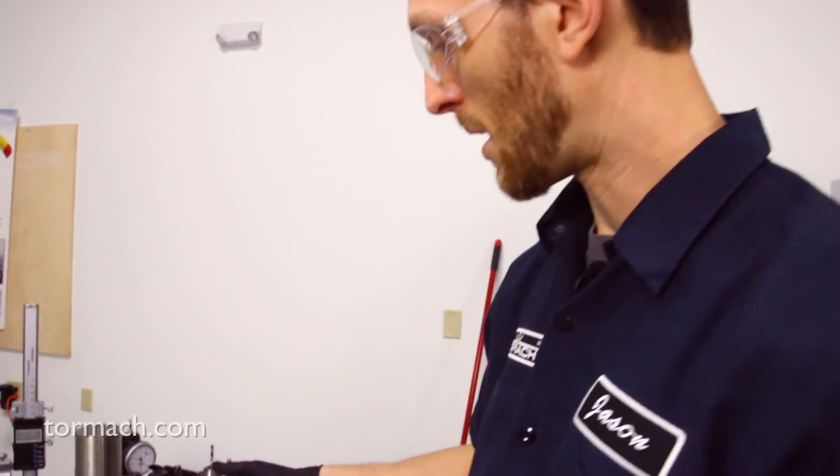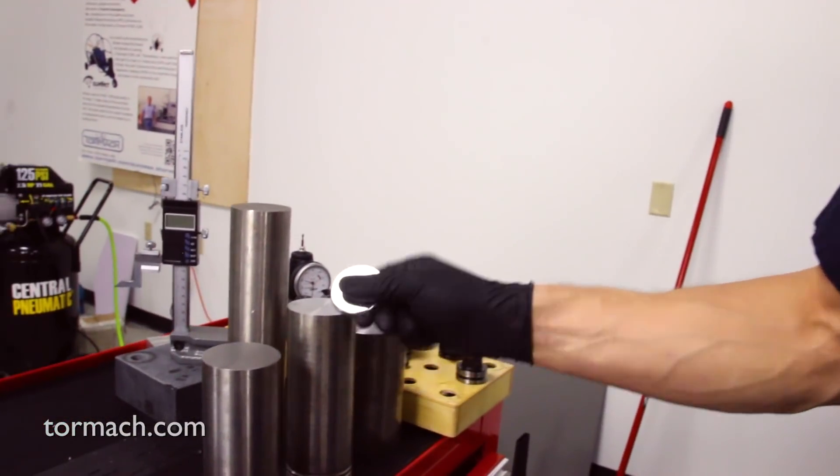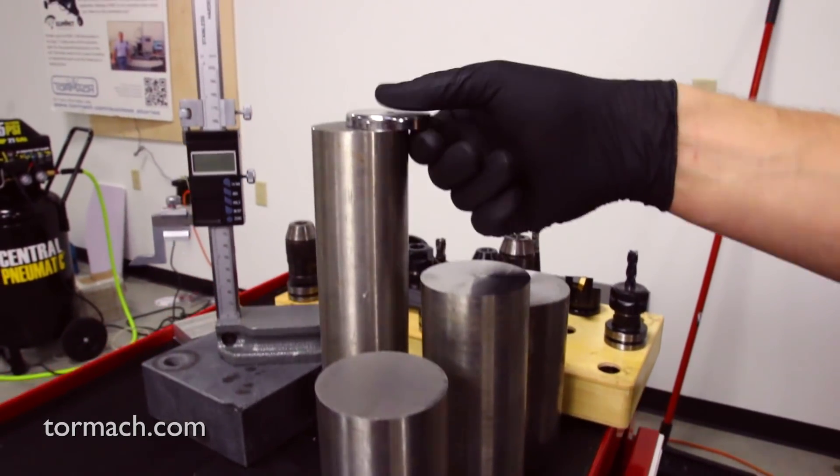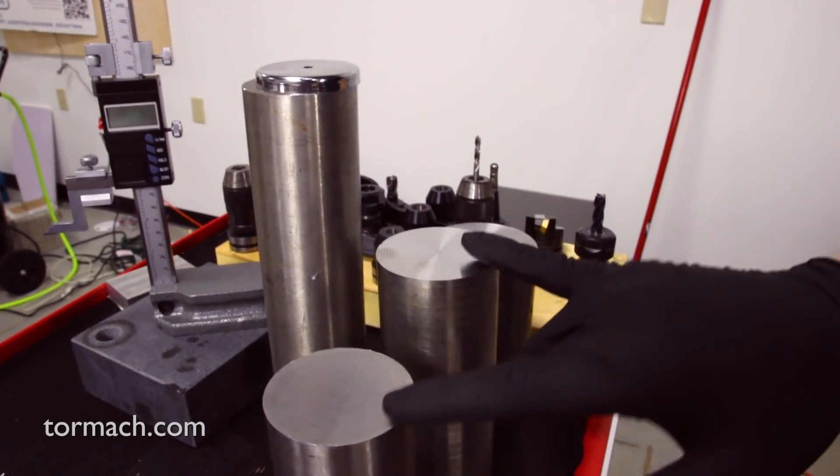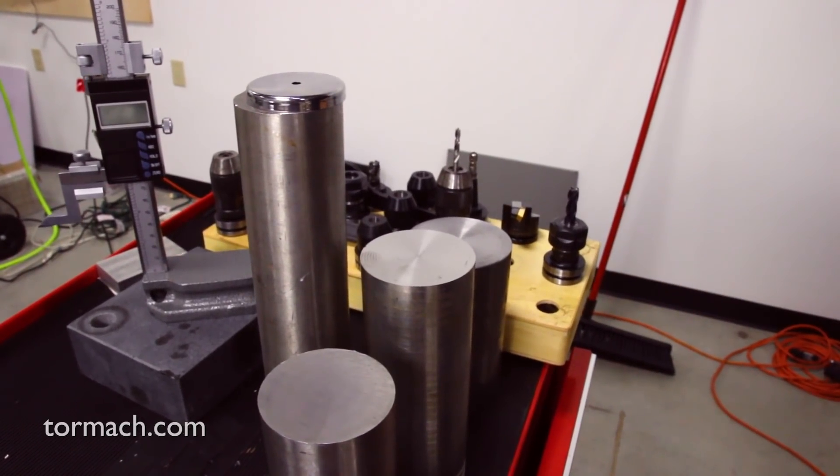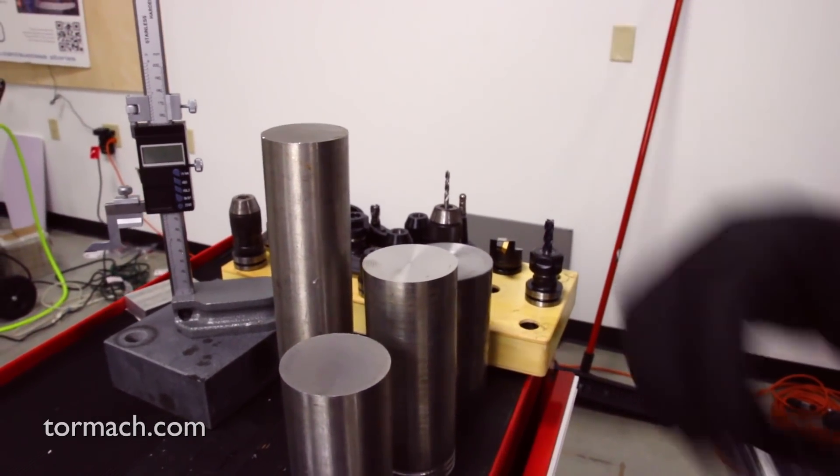We can check for whether the stock is magnetic or not. This one's magnetic, this one's not magnetic. If these two are some sort of stainless, that would have to be in the 400 series family since it is a magnetic material.